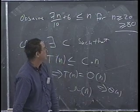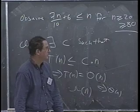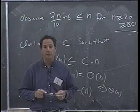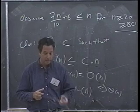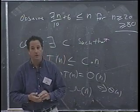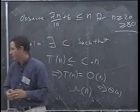What I want to do quickly now is show a class of arguments for obtaining lower bounds on classes of algorithms. This class of arguments is going to be called the information theory lower bound arguments.